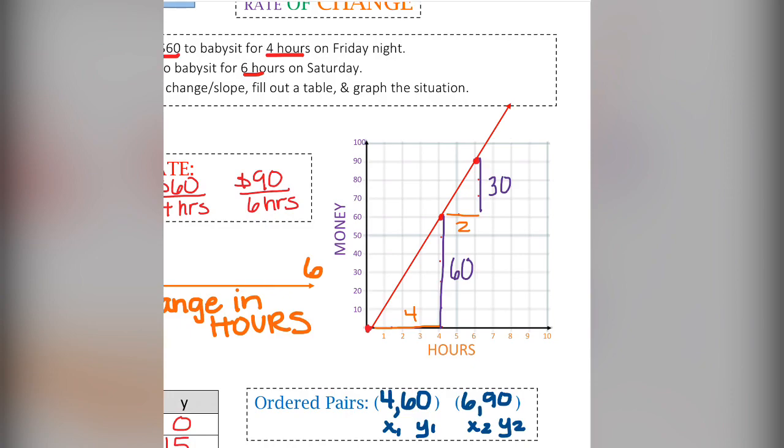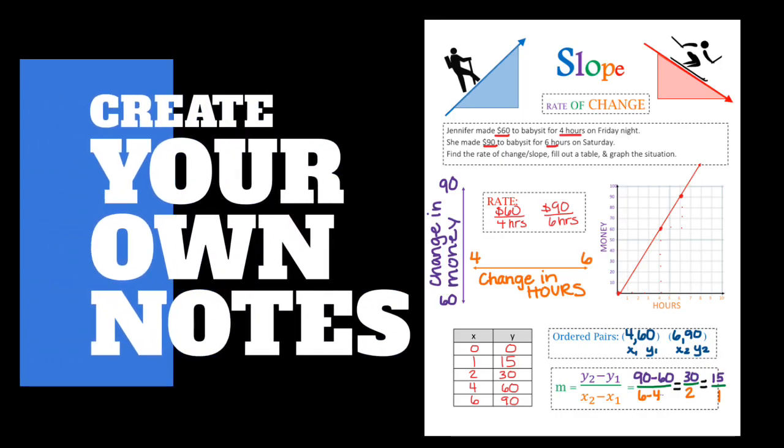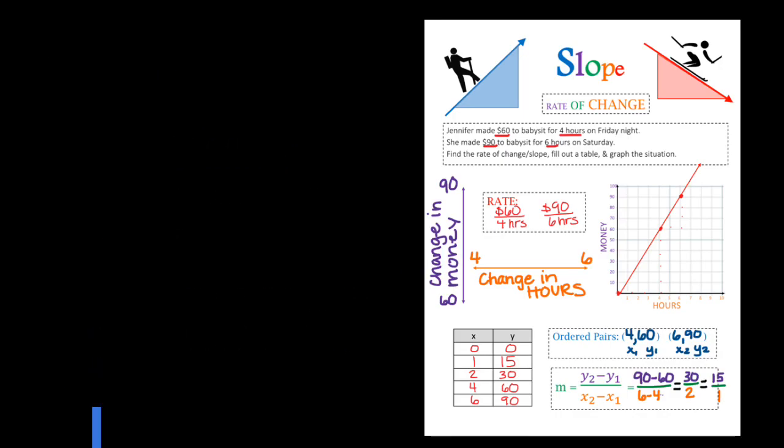Both of those are right triangles. I'm going to use that information to create ratios. We are given a change in y of 60 over a change in x, 4. Simplified is 15 over 1. And 30 over 2 is also 15 over 1. So our change in y over a change in x is this slope, which is 15 over 1. Now you can take the time to create your own notes.